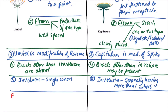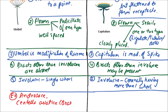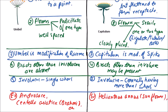Now the examples. For umbel, the example is Centella asiatica, which is also known as brahmi. While the examples for capitulum include Helianthus annuus, that is sunflower.